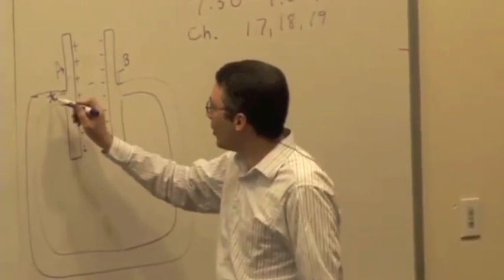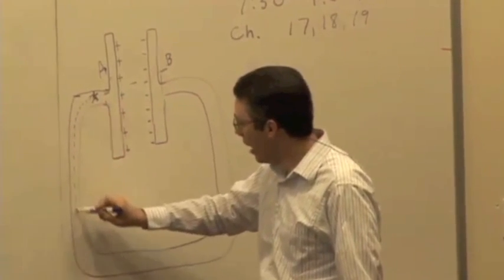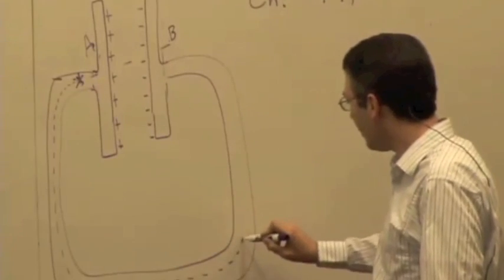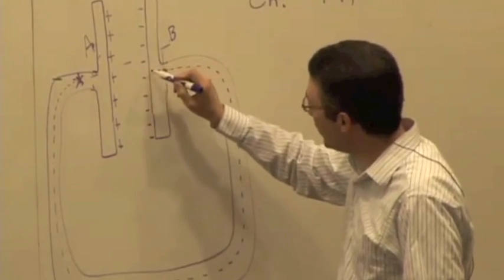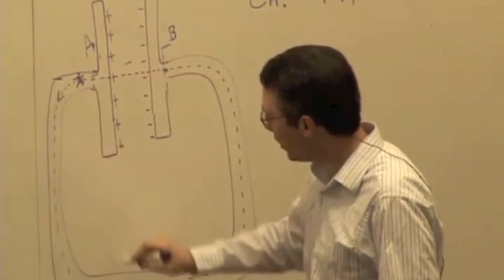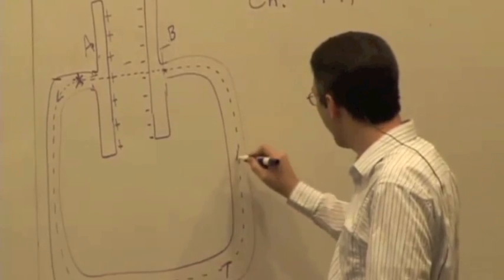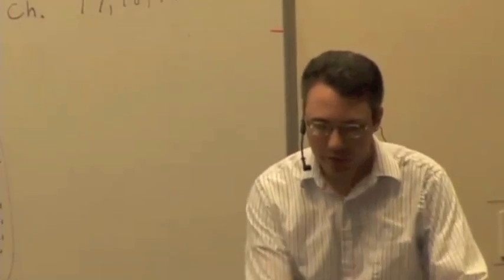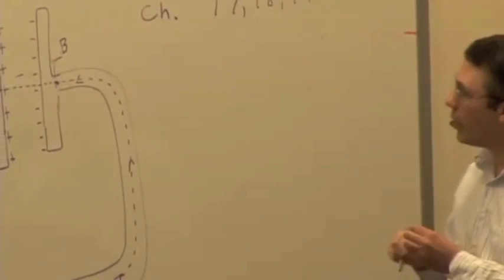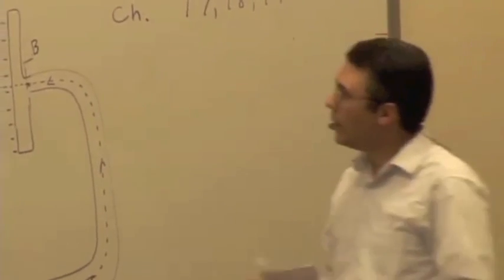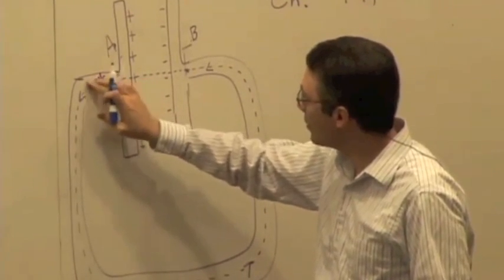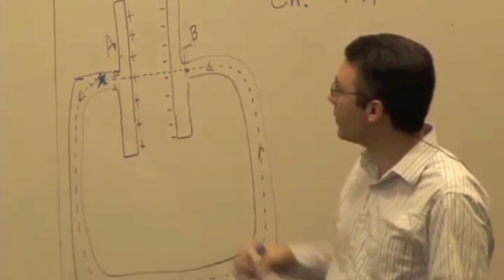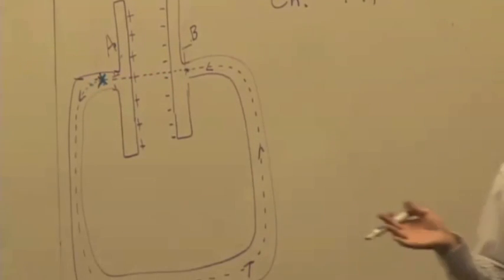So instead, I'm going to pick a path that starts at A, goes through the wire to B, then goes through the battery, and then back to A again. I should draw the electric field everywhere along that path. At location A, just outside the positive terminal of the battery, what's the direction of the electric field inside the wire?